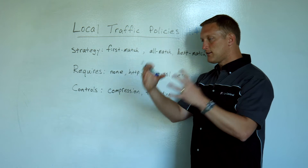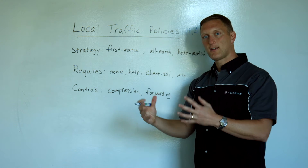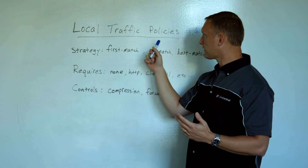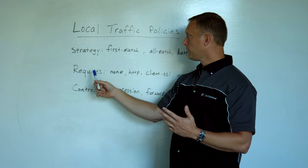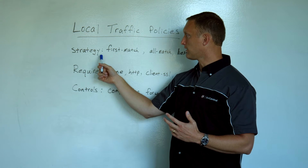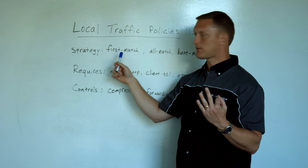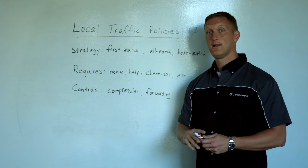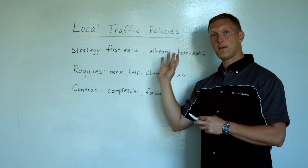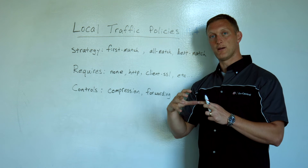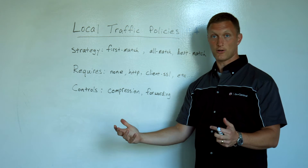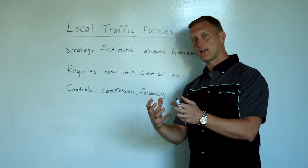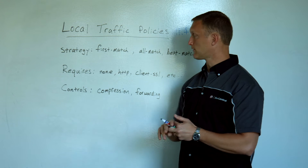This is the deep inspection of HTTP traffic. Some of the specifics to go through: you need to select a strategy, and there are three different types — first match, all match, and best match. By the way, you can set more than one local traffic policy per virtual server, and each policy is going to do something.